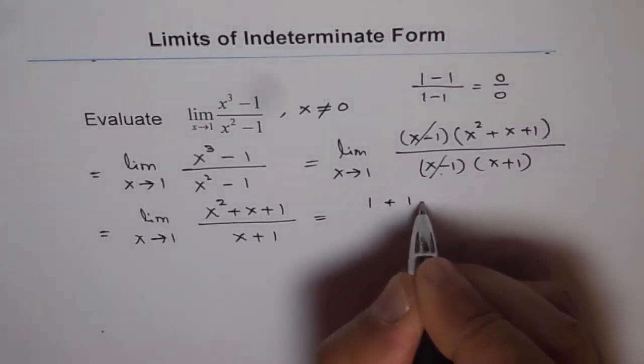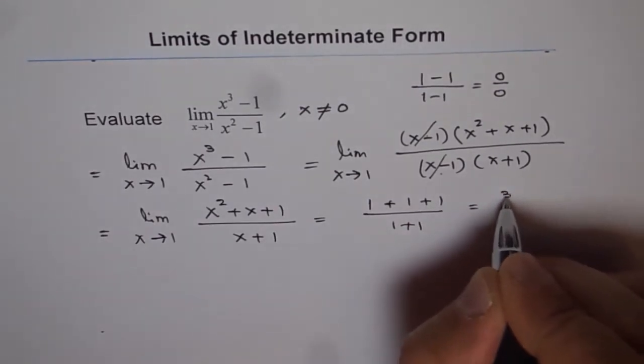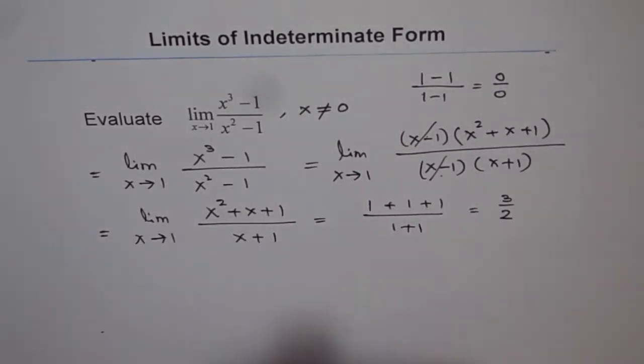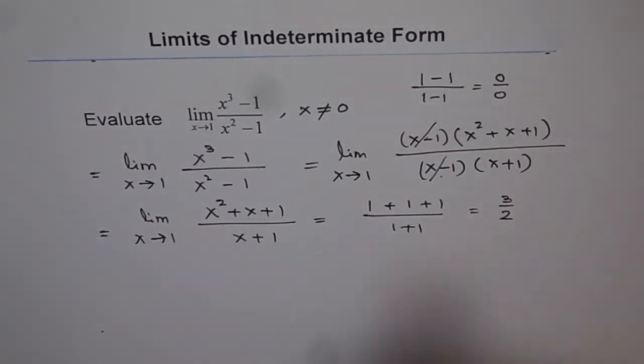So we get 1 plus 1 plus 1 over 1 plus 1, which is 3 over 2. And therefore, limit of this function as x approaches 1 is 3 over 2.